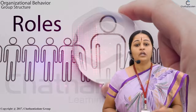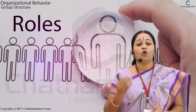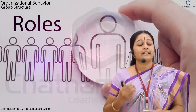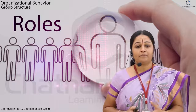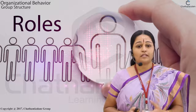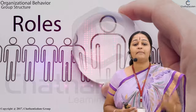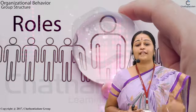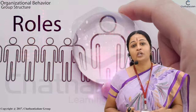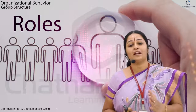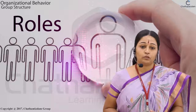Roles are a set of behavior patterns which an individual occupying a certain position in society is expected to display. Dimensions of roles include role identity — the attitude and behavior of an individual gives rise to a role identity — and role perception, which involves understanding how one is supposed to behave in a particular role.